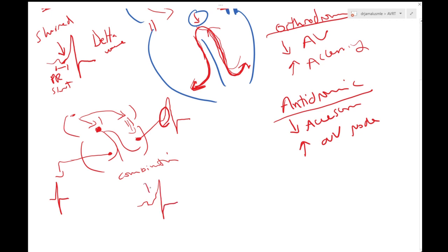So this delta wave is mainly because electricity is coming both into the AV node and into the accessory pathway. But the accessory pathway does not wait, so it will let some electricity go in and that will cause the delta wave.